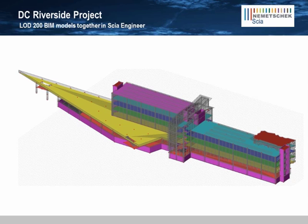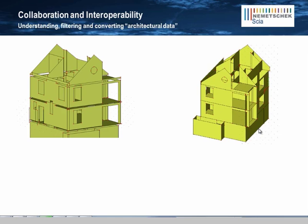The beams and columns transfer in as 1D elements. From the architect's model, I can begin to verify and, where necessary, clean up the architect's information. This concept of being able to clean up an architect's model is another important technology in SIA Engineer that makes the model exchange with the architect useful.